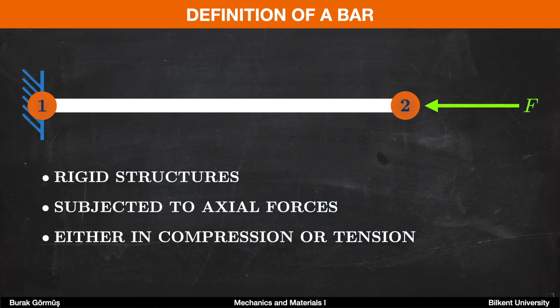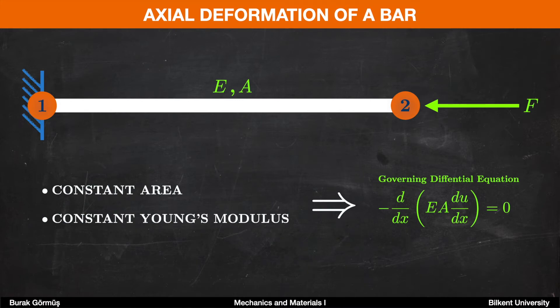After giving this brief introduction about bars, let's talk about how we can mathematically express the deflection when they are subjected to axial forces. If we assume that a bar has constant area and Young's modulus, we can express the deflection throughout its length with the differential equation that you can see on the right bottom. This is a second-order differential equation, and this is our governing differential equation.